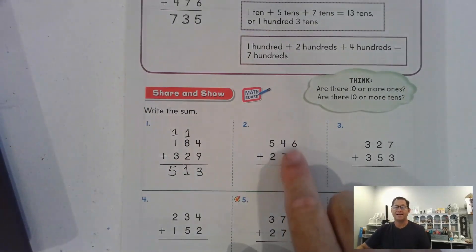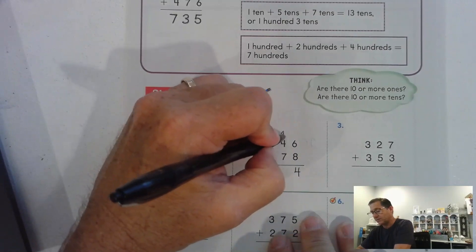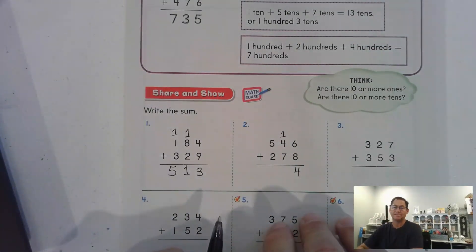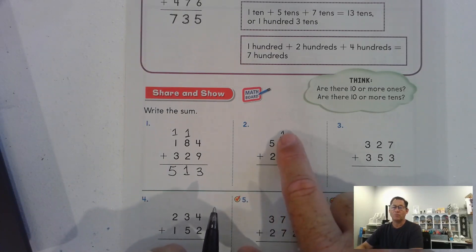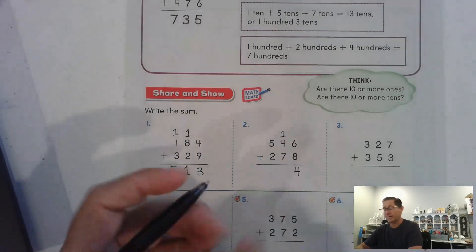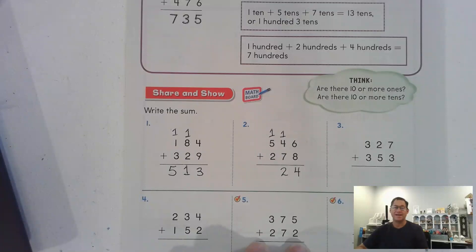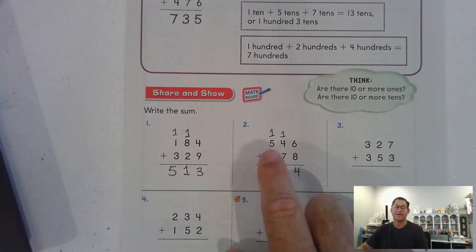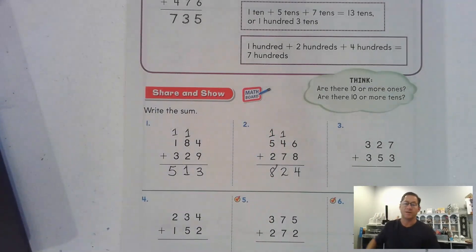Number two: eight and six ones is fourteen ones — we're going to regroup that as one ten and four ones. Go to the tens: seven and four we know is eleven, and eleven plus one ten is twelve tens. We need to regroup that as one hundred and two tens. Now the hundreds: five hundred, seven hundred, eight hundred — we don't have to regroup the hundreds.